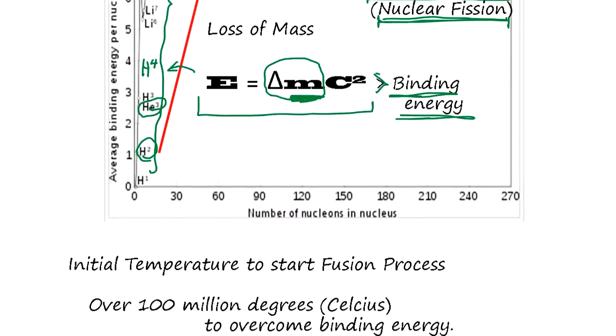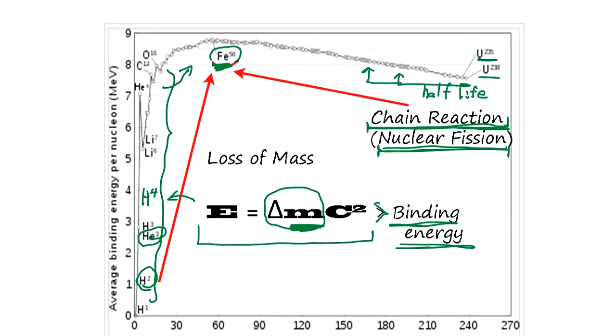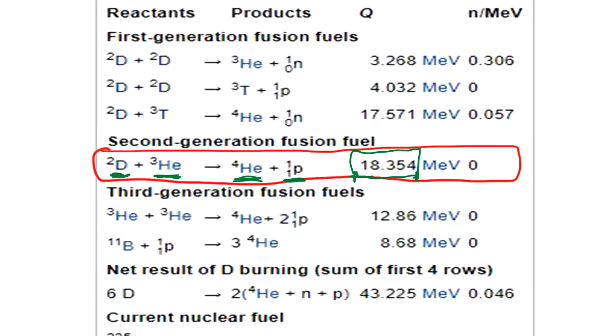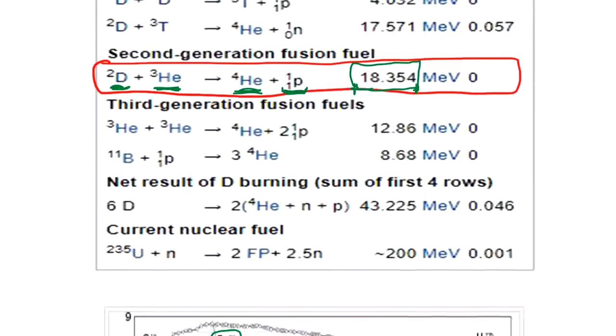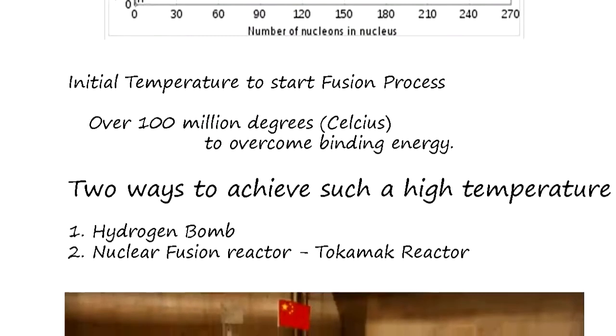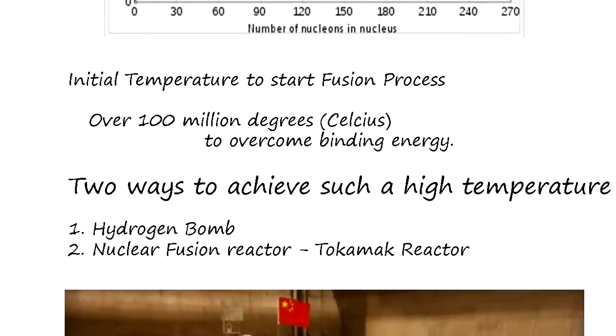Each atomic reaction generates energy. When it generates energy, it simply creates Helium plus proton. This proton is going to hit the reactor's wall, and the reactor's wall absorbs the energy and heats up. That heat is used to boil water and generate electricity. That's nuclear fusion.